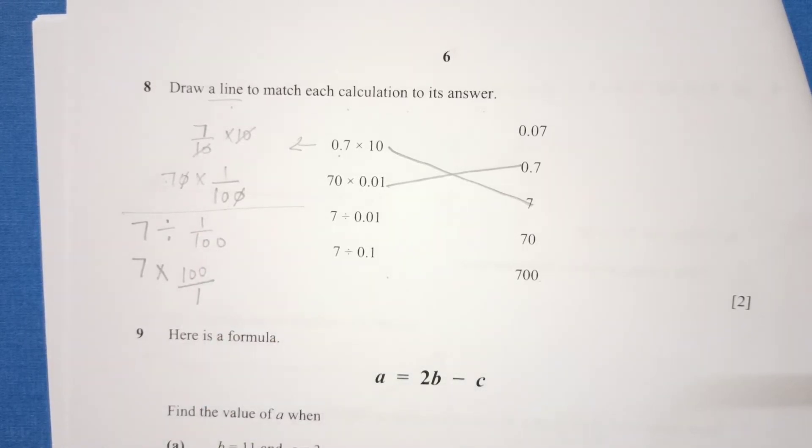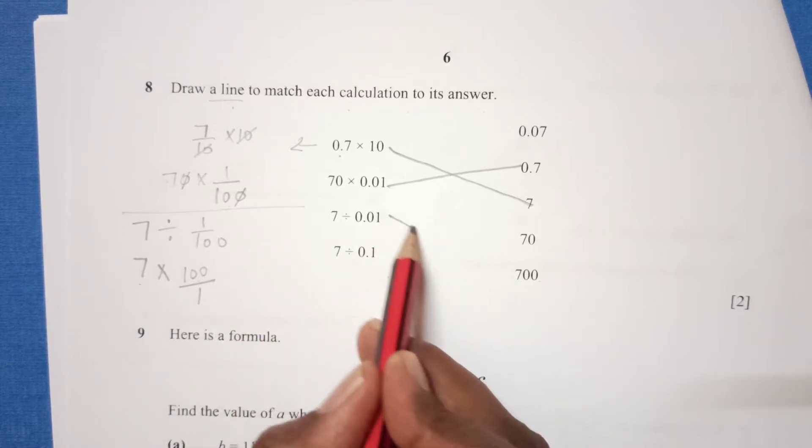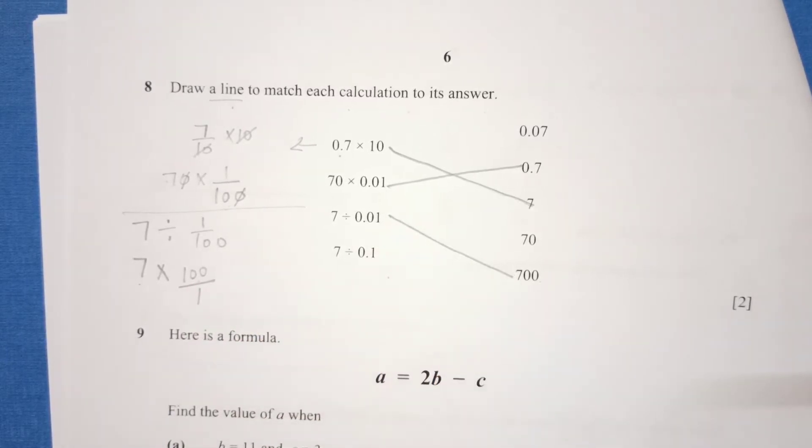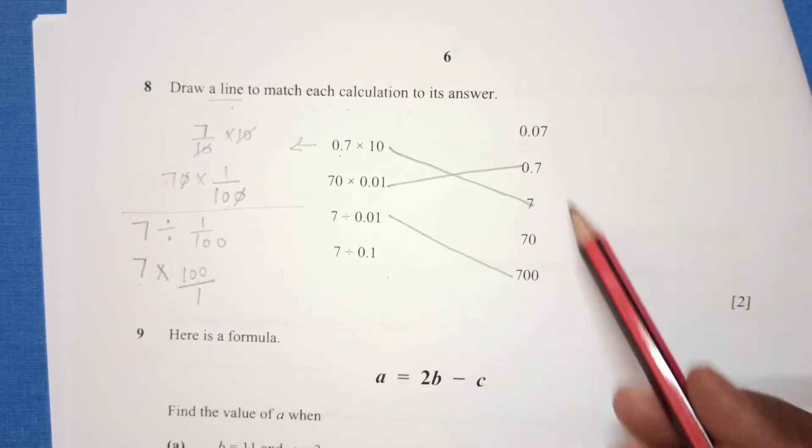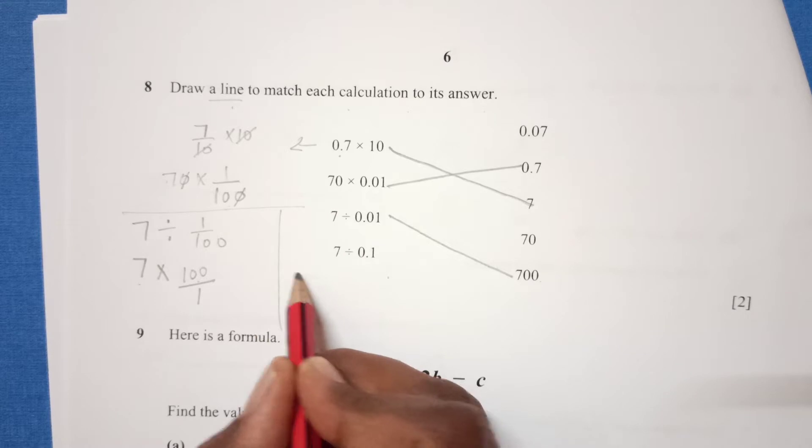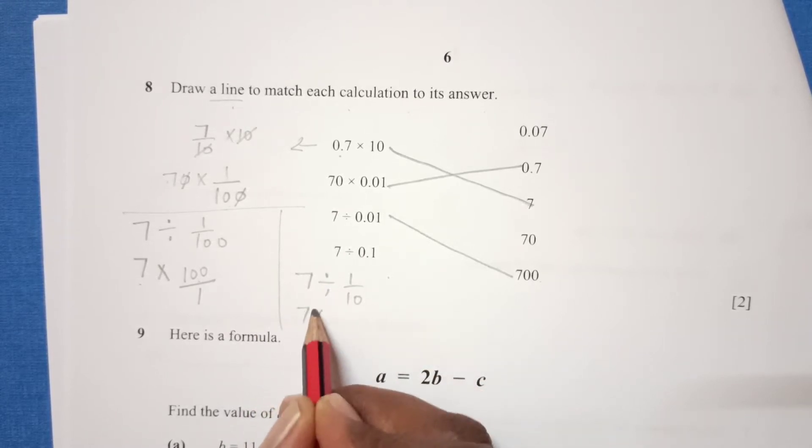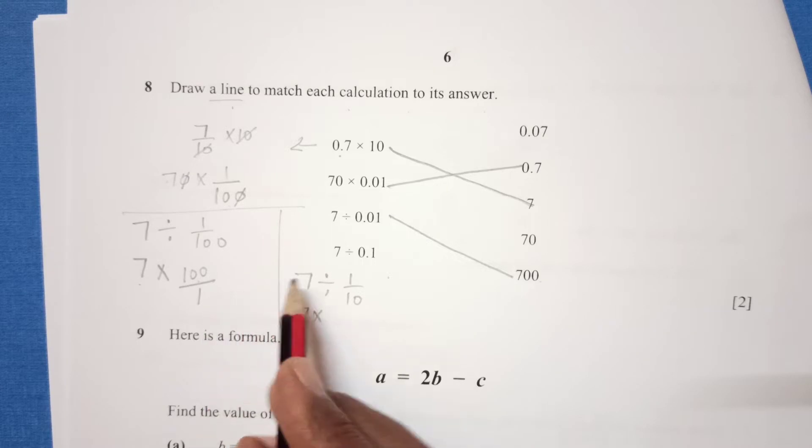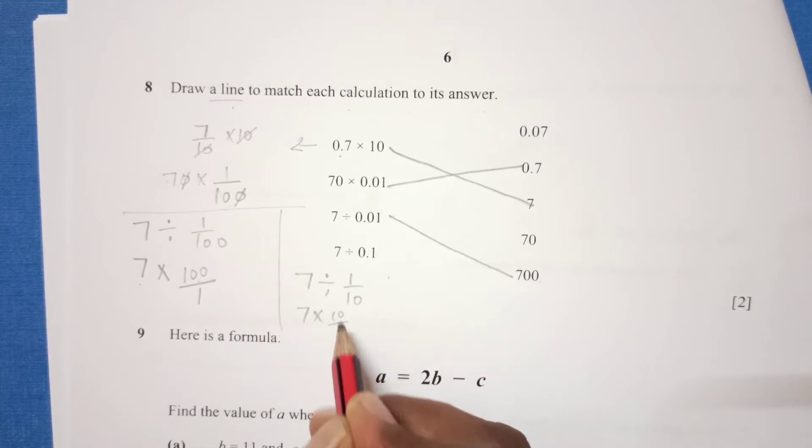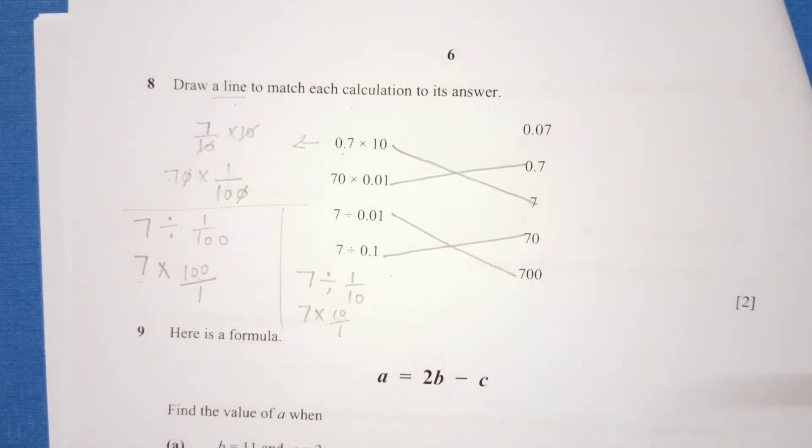This one, 7 divided by 0.01, can be written as 1 over 100. When you do this, the sign changes to multiplication and this becomes 100 over 1. We take the reciprocal, so 7 times 100 is 700. Now we have one more calculation: 7 divided by 0.1, which is 7 times 10, equals 70.